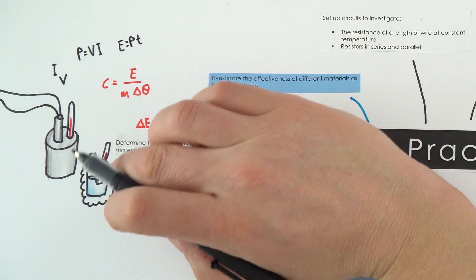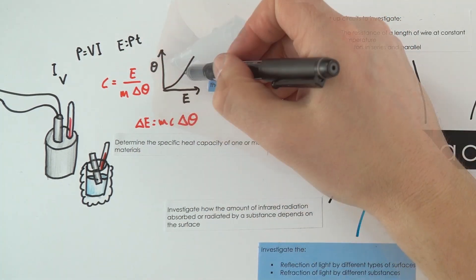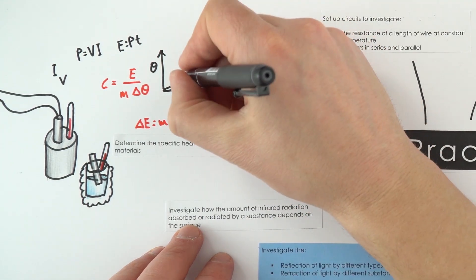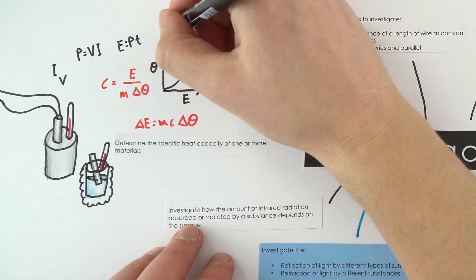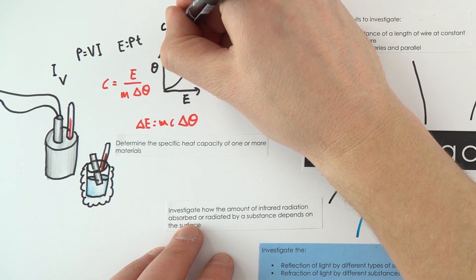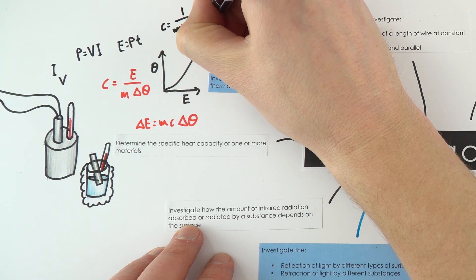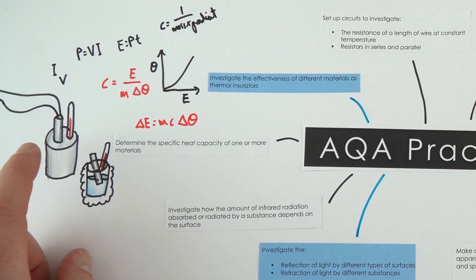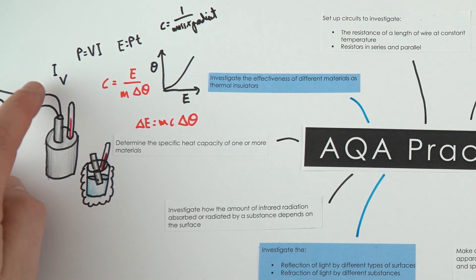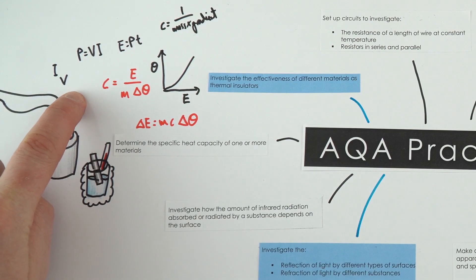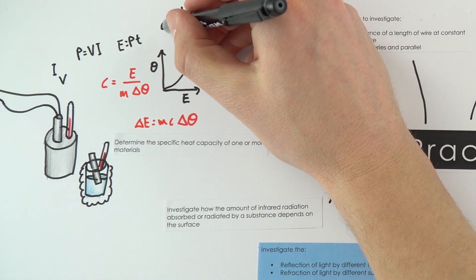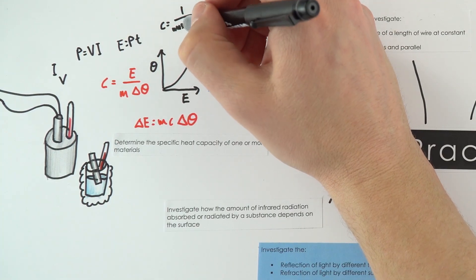There are different ways to interpret your data — you might plot a graph with temperature change on one axis and energy transferred on the other, then work out the gradient. Your specific heat capacity is then 1 divided by the mass times the gradient. Effectively, you have a known mass of solid or liquid, heat it up, measure the current, potential difference, and time to work out the energy transferred.